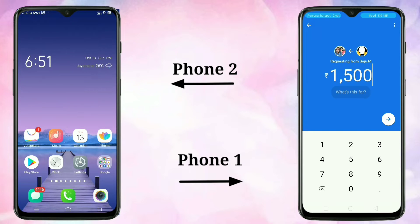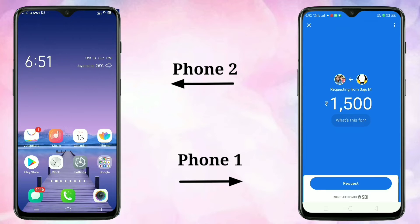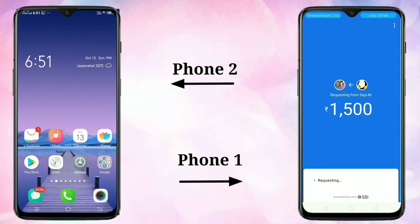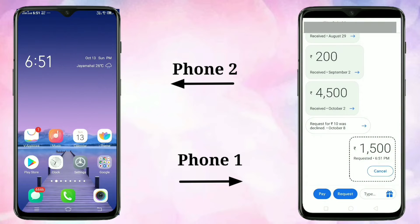After that, tap on the arrow icon, then the tick symbol, then tap on Request. You can see it is requesting. On Phone 2, you can see one notification.